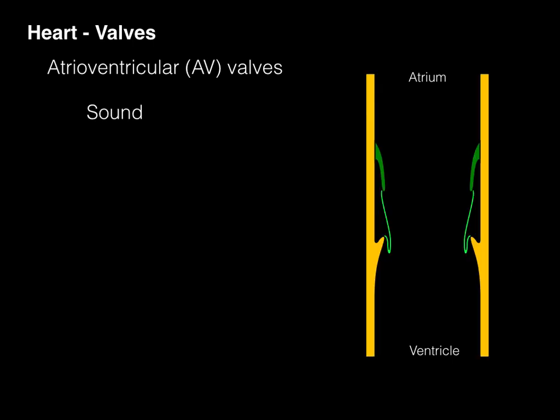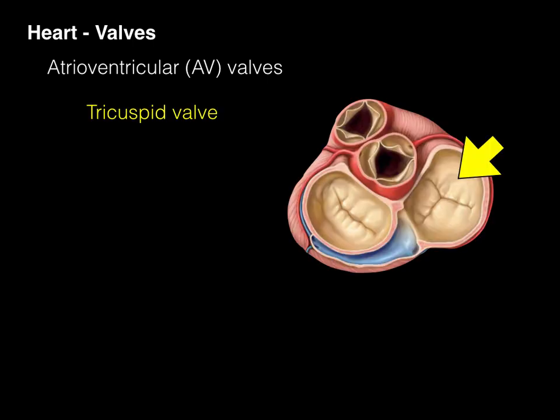Now the sound, whenever those AV valves slap shut, they make a sound. It's the first sound in the lub-dub. When people talk about the sound that heart valves make, lub-dub, lub-dub, the lub sound is what we call the first heart sound or S1 for sound one. That is the closing of the atrioventricular valves.